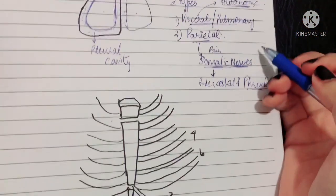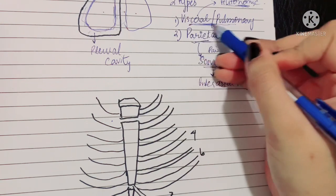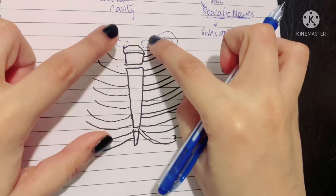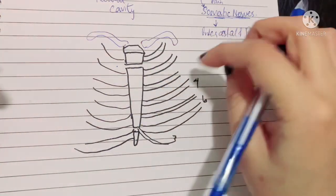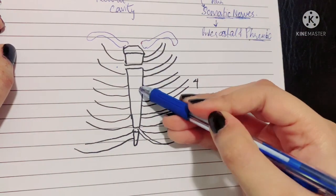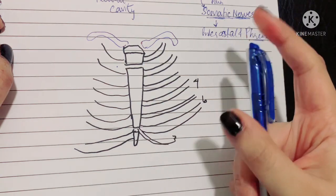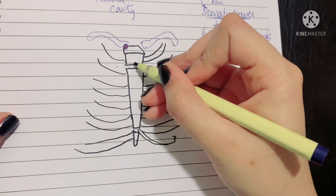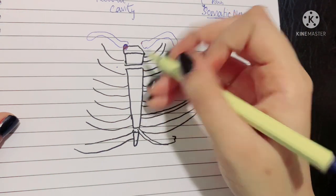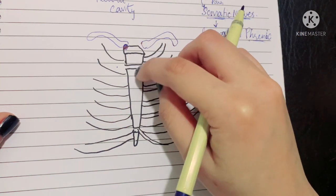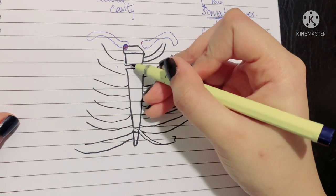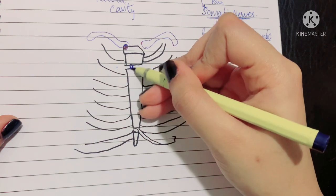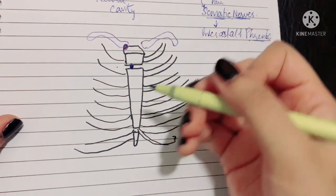The visceral pleura will have the similar surface marking as your lungs. Let's start with visceral pleura's anterior margin. Suppose these are the clavicles, this is your rib cage, this is your manubrium, body of sternum and xiphoid process. The first point lies at the sternoclavicular joint. The second point lies at the sternal angle, where the manubrium is joining with the sternal body. In the median plane of that angle is your point number two for visceral pleura.